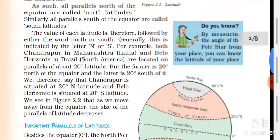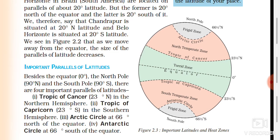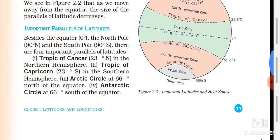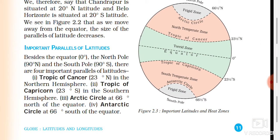The area where the equator is, and the area near the equator, receives the highest sunlight and is the hottest place. That zone is called the torrid zone. The globe is divided into different heat zones: frigid zone, north temperate zone, torrid zone, south temperate zone, and again frigid zone.